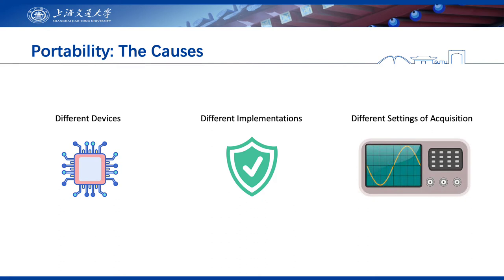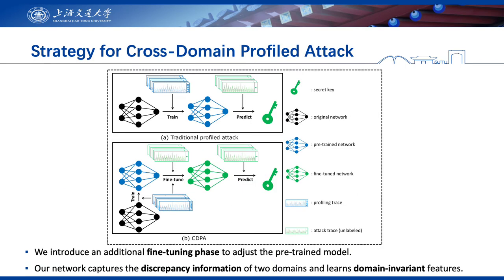In fact, device discrepancy is not the only reason for the portability issue. Different implementations and different acquisition settings can also lead to poor attack performance. For example, hiding countermeasures and changing the placement of the probe can result in two different distributions of traces. A profiled attack is composed of two phases: a profiling phase and an attack phase. A limitation of this two-phase attack is that it cannot utilize the discrepancy information, which is directly neglected. So, in order to address the portability issue, we propose to extend the traditional profiled attack and introduce an additional fine-tuning phase to adjust the pre-trained model.